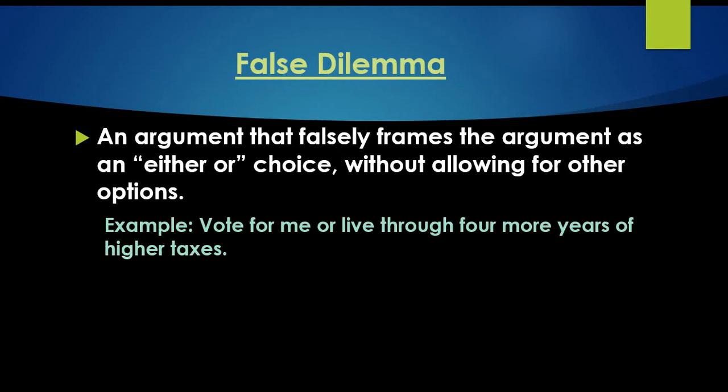A false dilemma is an argument that falsely frames the argument as an either-or choice without allowing for other options. An example would be: vote for me or live through four more years of higher taxes. It's not always one way or the other — there could be other alternatives. A false dilemma paints a situation as either this or that when other outcomes are possible.